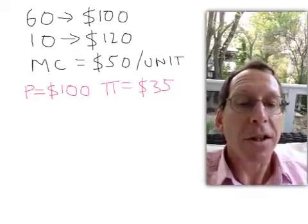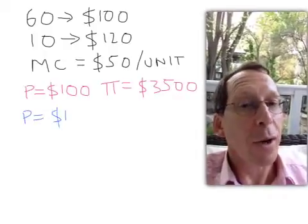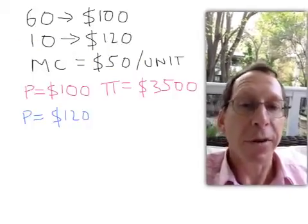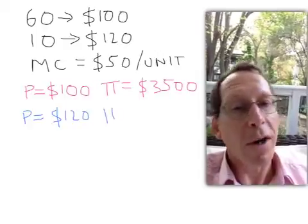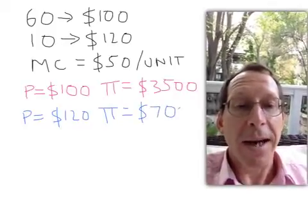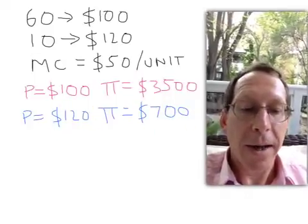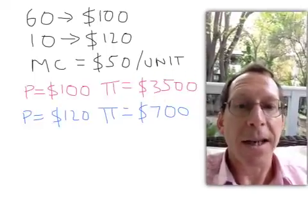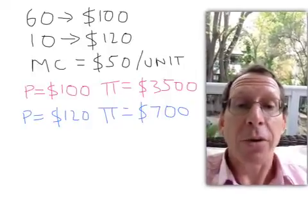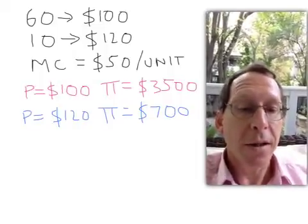What if it sets a price of $120? Well, now it only sells to 10 customers. Its revenue is only $1,200. But it only has to make 10 units, so its costs are only $500 — 10 times $50. Its profit is $1,200 minus $500, giving a profit of $700. So it can either make $700 by charging $120 or $3,500 by charging $100. Clearly, it prefers $100 per unit. If a monopoly can only charge a single price, in this example it will sell to all customers at a price of $100.